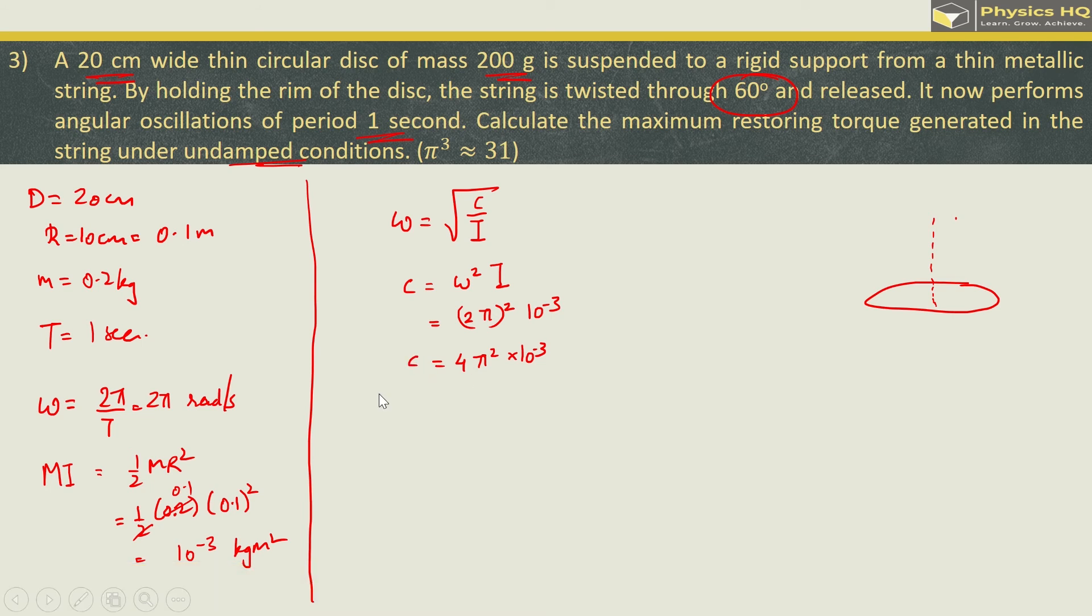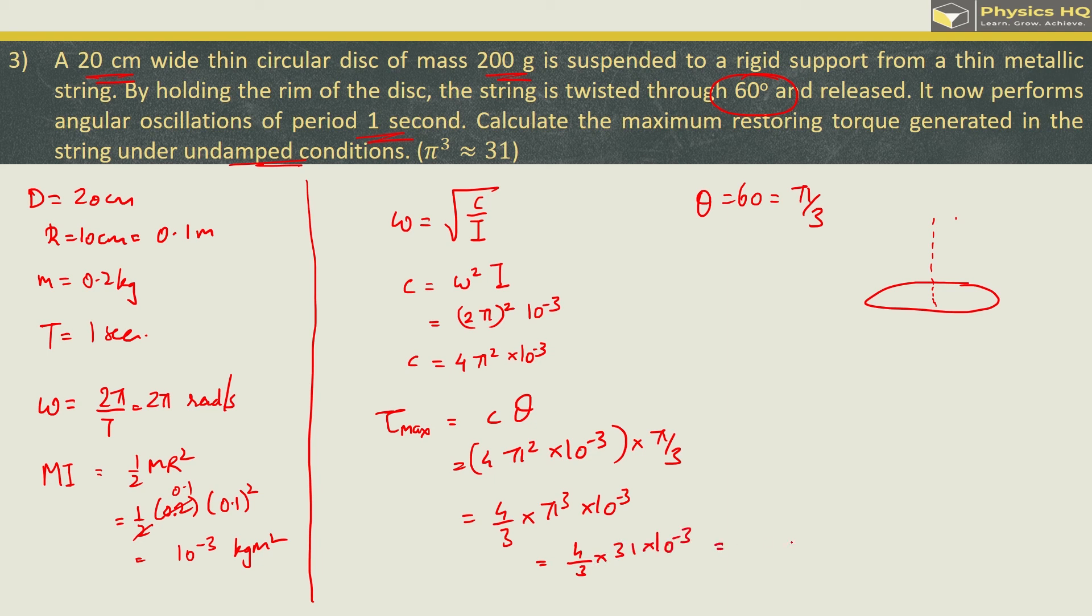Now omega is given as root of c by i so from here we can find c which will be omega squared into i. So we got 4 into pi squared into 10 raise to minus 3 as the torsional constant. Now magnitude of maximum restoring torque tau max is given by c into theta so we got this as 4 pi squared into 10 raise to minus 3 and theta they have given as 60 degrees which is pi by 3. So finally we got 4 by 3 pi cube into 10 raise to minus 3. Now pi cube is 31 and when we solve this we will get 41.33 into 10 raise to minus 3 newton meter or you can write this as 0.04133 newton meter. Let us check out the next sum.